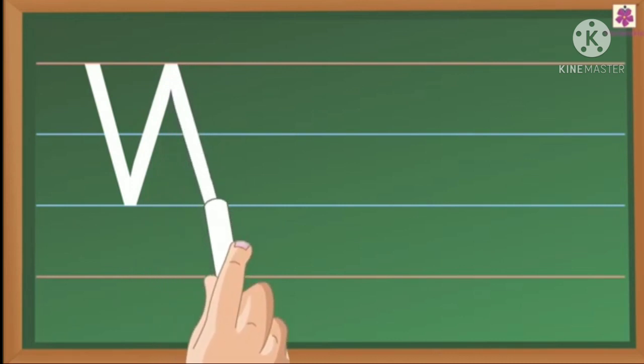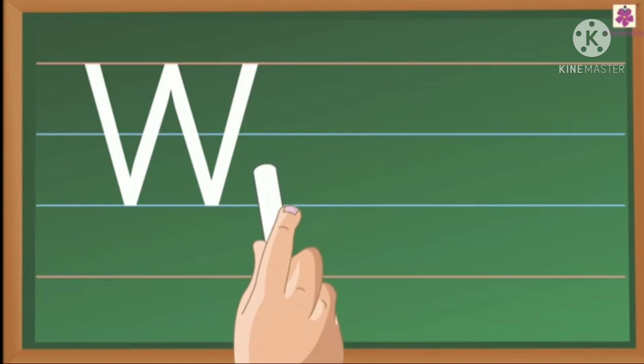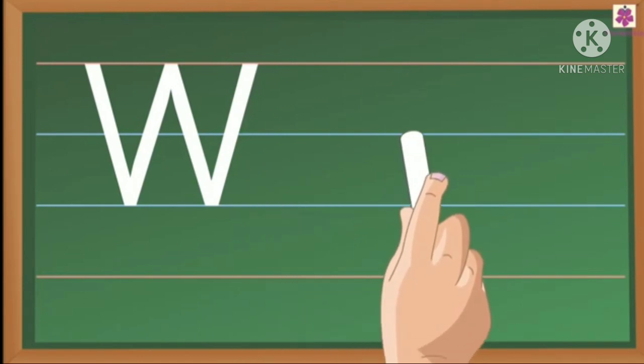Then, another slanting line to the right. And, a slanting line to the top. Small W.